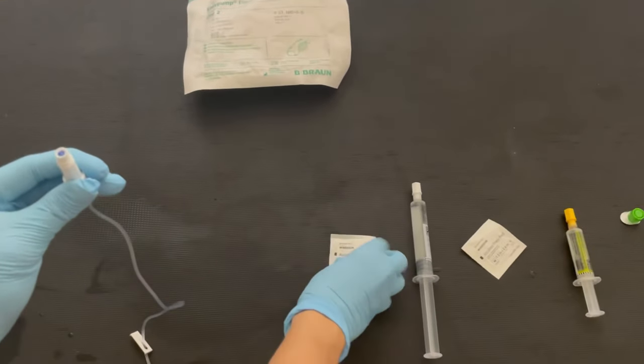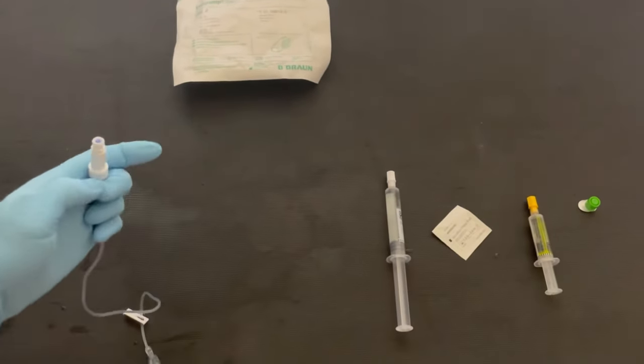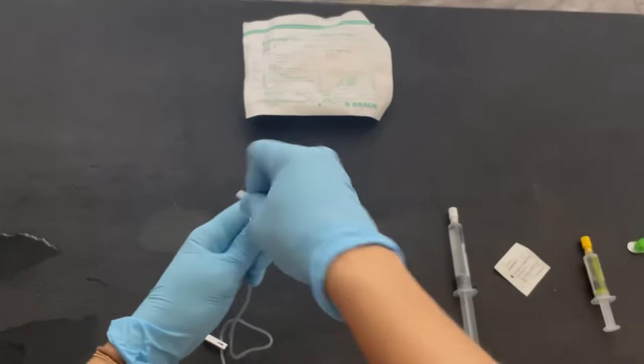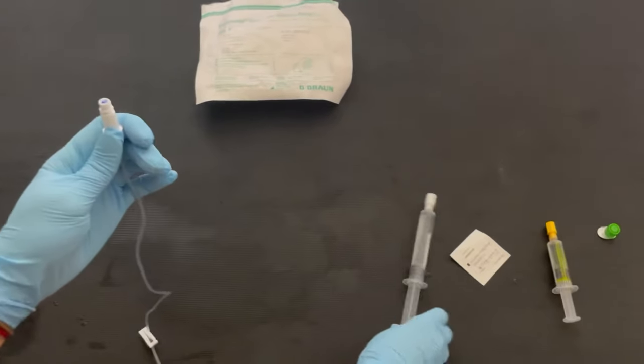And then you're going to go ahead, again from left to right, so you're going to clean this. Scrub the hub for 20 seconds, let it dry for 15 to 20 seconds, making sure you don't twist the line itself.